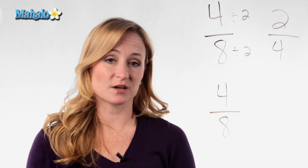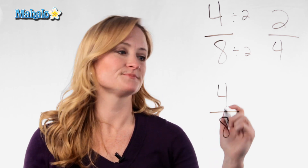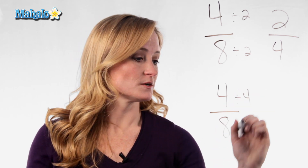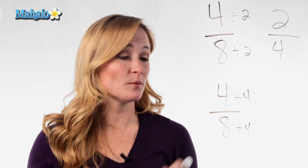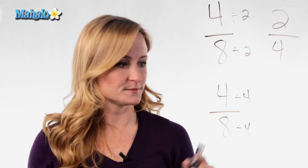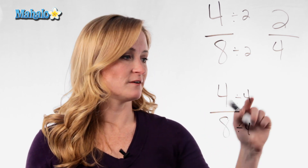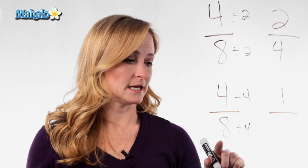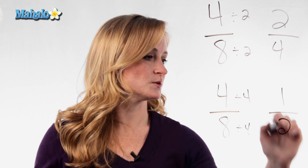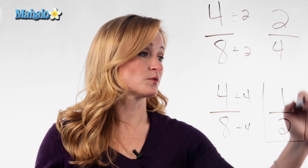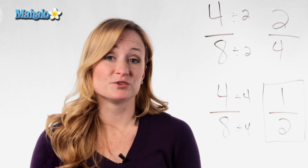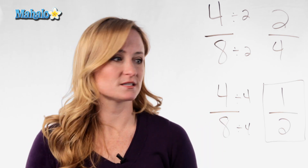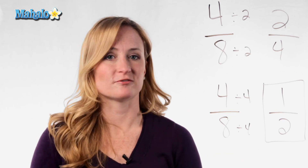What's the biggest number that goes into both four and eight? It's four. So we're going to divide the top and the bottom by four. Four divided by four is one, and eight divided by four is two. So the correct answer in reducing completely, the fraction four-eighths is one-half.